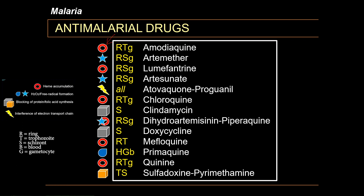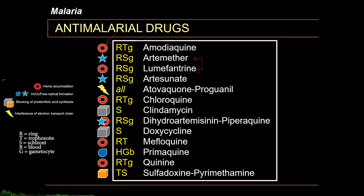Artemether is used to treat uncomplicated malaria and is usually paired with lumefantrine. Given intramuscularly, it can also be used to treat severe malaria. Its mechanism of action is conversion into dihydroartemisinin (DHA), which binds to heme and leads to the release of free radicals. It is effective against the ring stage and early schizont stage, with some gametocidal effects. It is generally well tolerated, only contraindicated in hypersensitivity reactions, and is proven to cause rapid clearance of parasites.